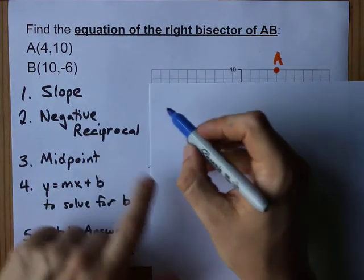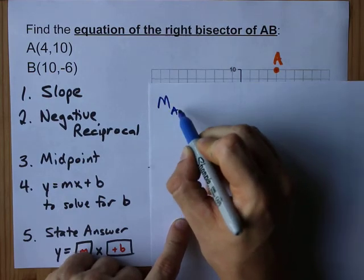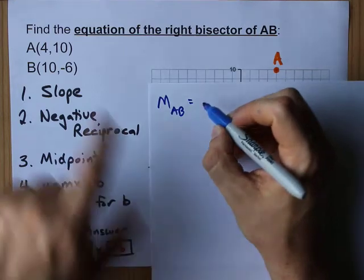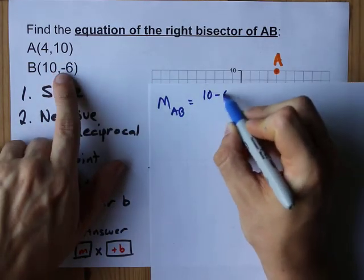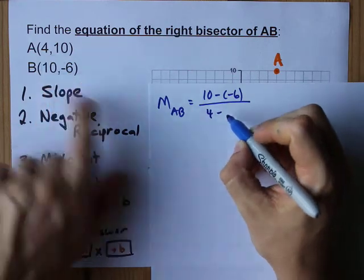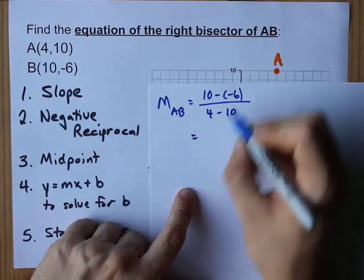Step one, find the slope of AB. The slope is y2 minus y1 over x2 minus x1. That's 10 minus negative 6 over 4 minus 10. What do I get here?